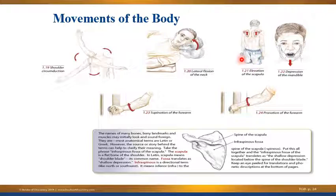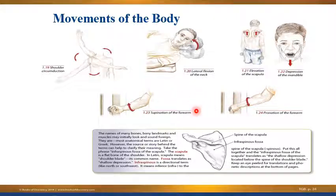Here you have elevation of the scapula and also the motion of depression, which can occur at both the scapula and the mandible. Supination and pronation are particular to the forearm: when you turn the palm up, that's supination; when you turn it down, that's pronation. When we talk about the forearm, we'll see how the radius and ulna — the two bones of the forearm — interact to create that motion.